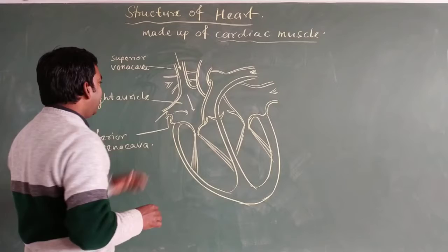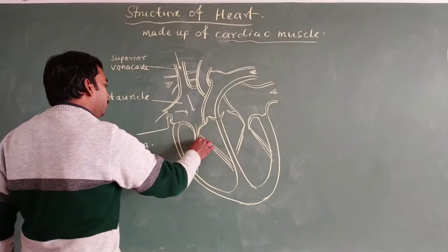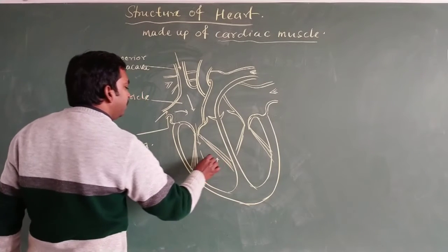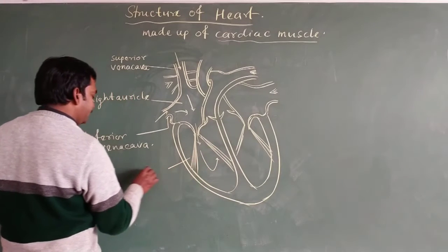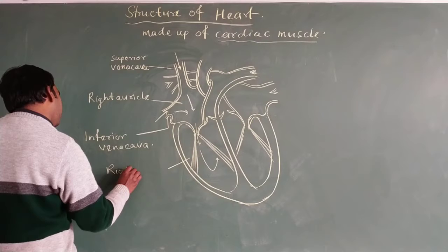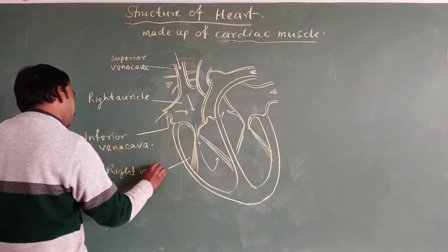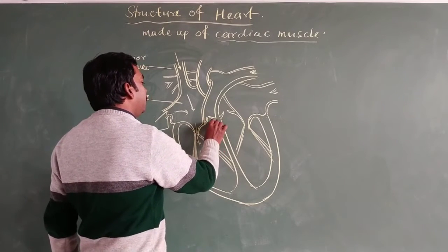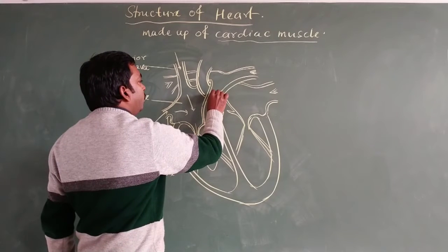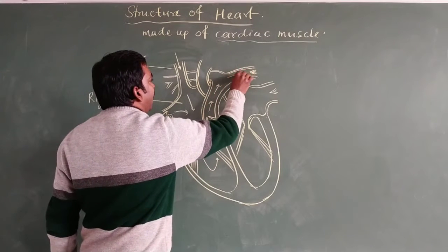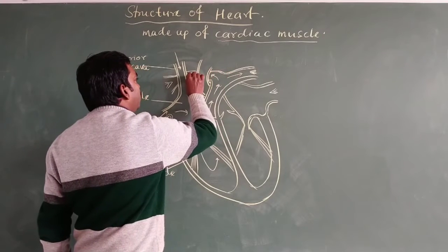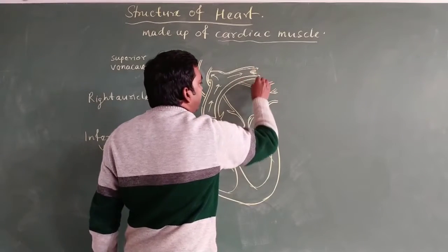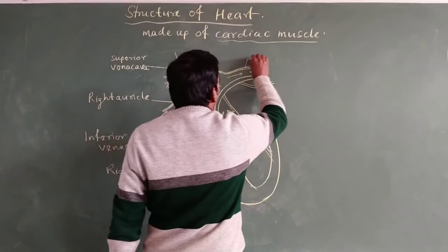Blood comes into the right atrium, and from the right atrium it passes to the right ventricle. From the right ventricle, blood passes into an artery that carries blood to the lungs. The artery which carries blood to the lungs is known as the pulmonary artery.